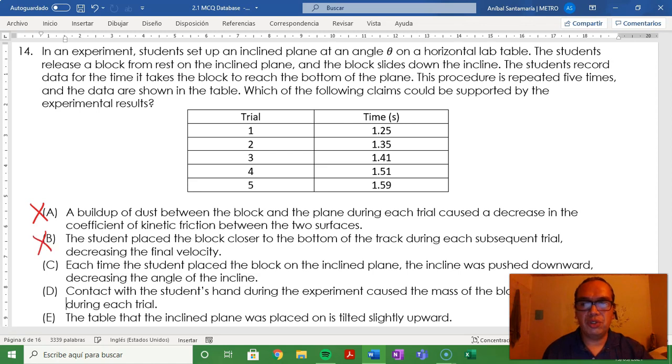Now let's jump to option D. Contact with the student's hand during the experiment caused the mass of the block to increase during each trial. A simple analysis could show that the acceleration is independent of the mass, so this shouldn't affect the time for traveling down the slope.